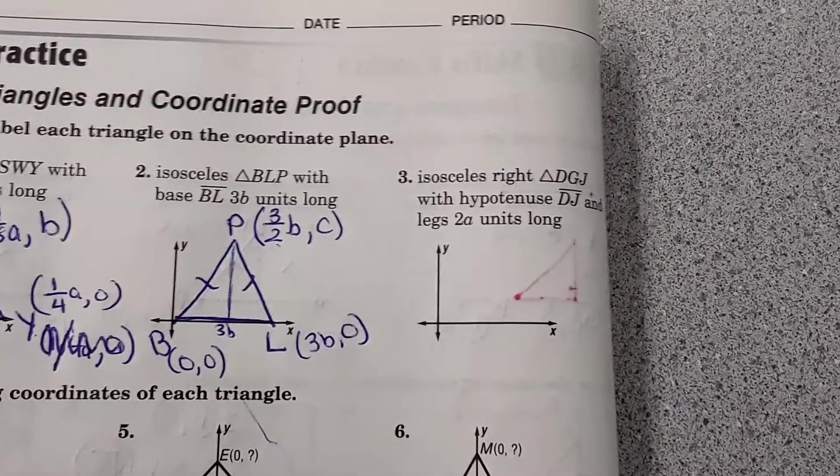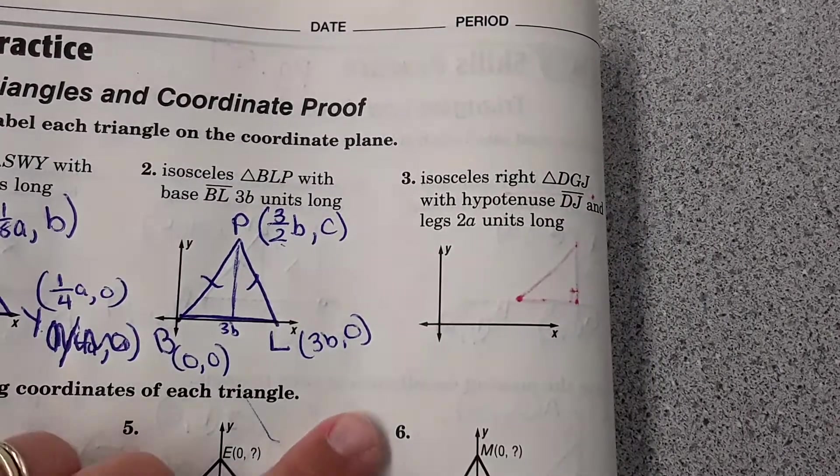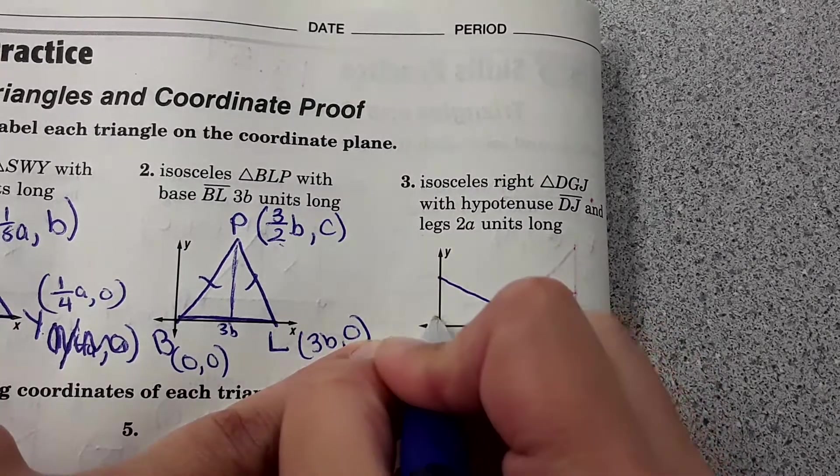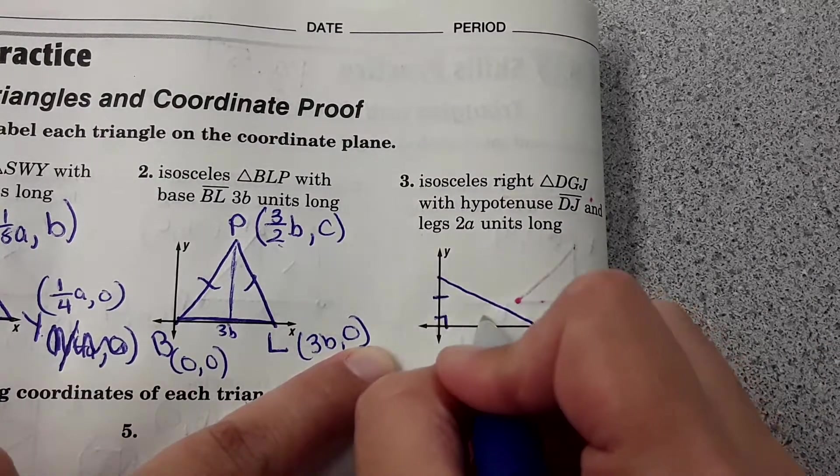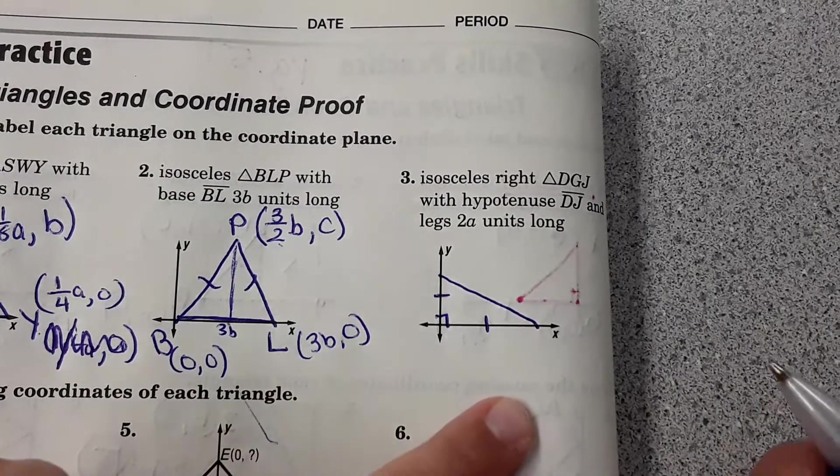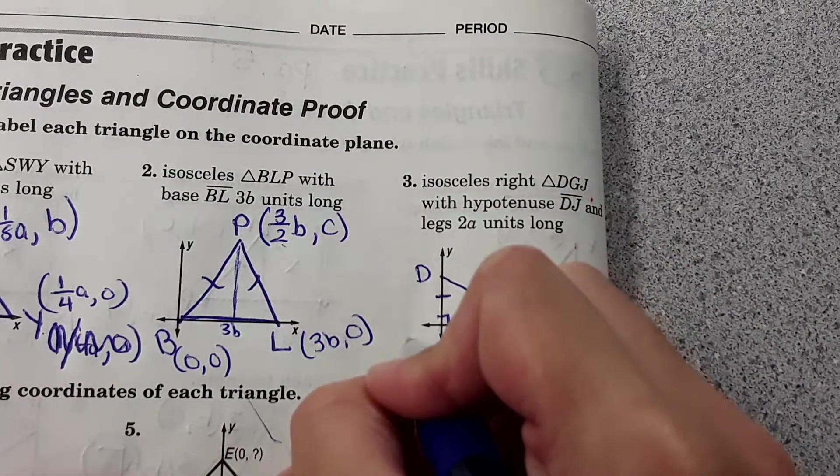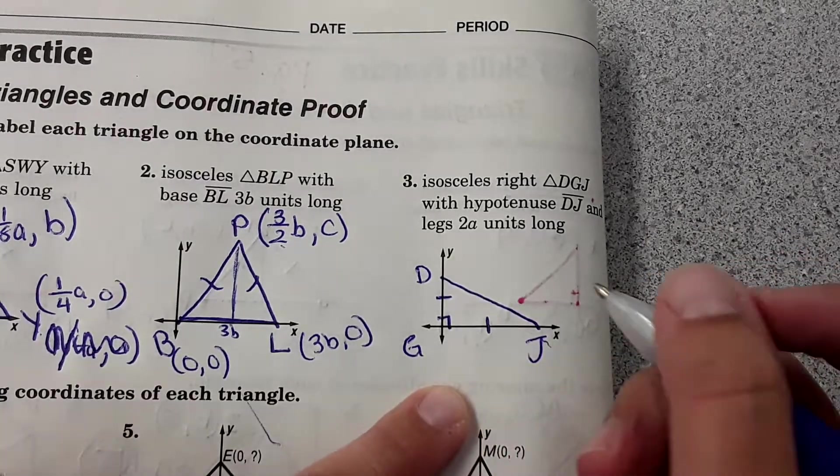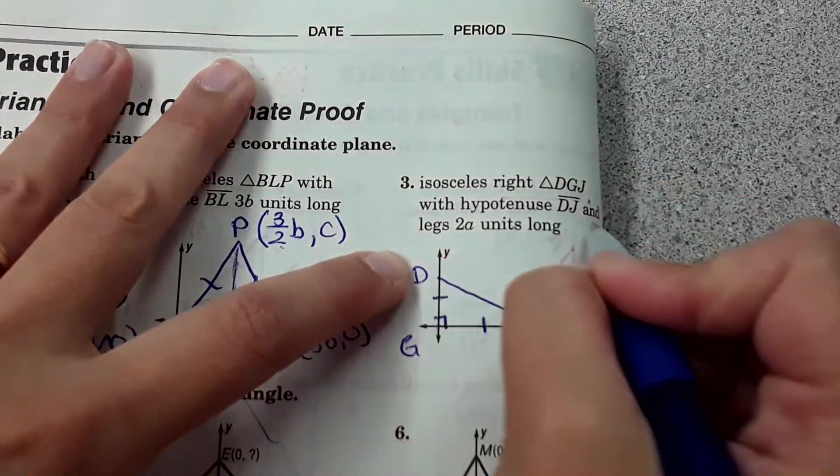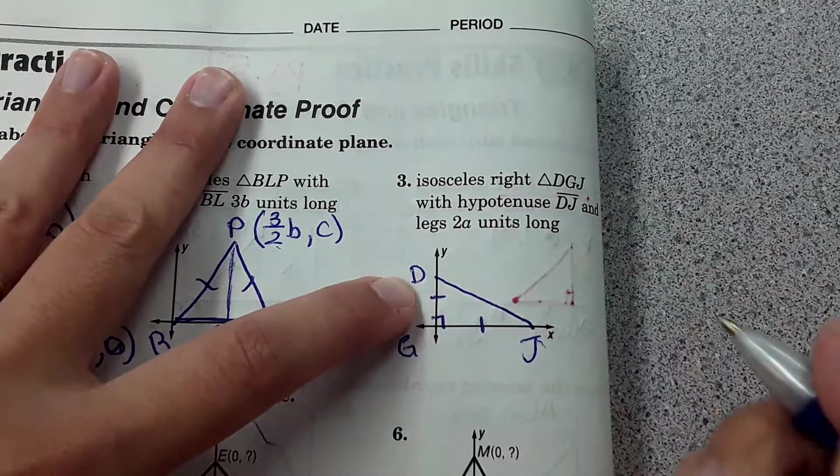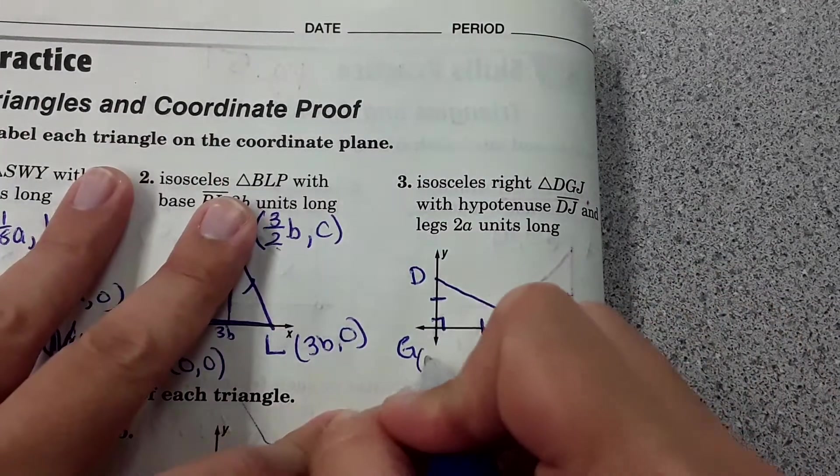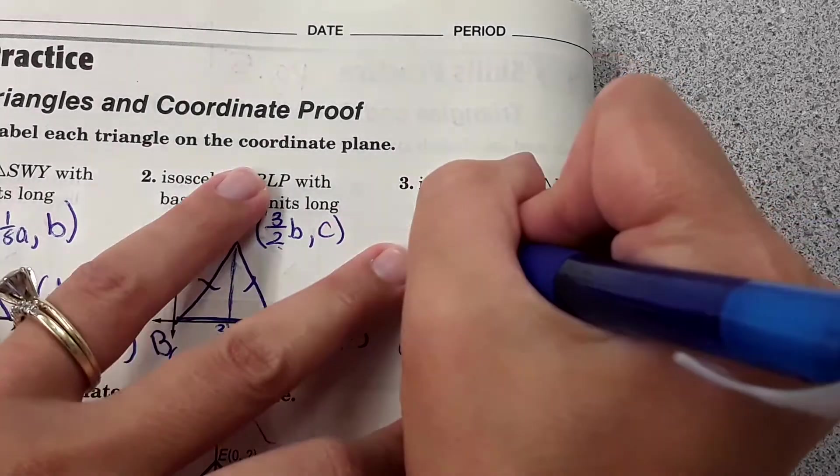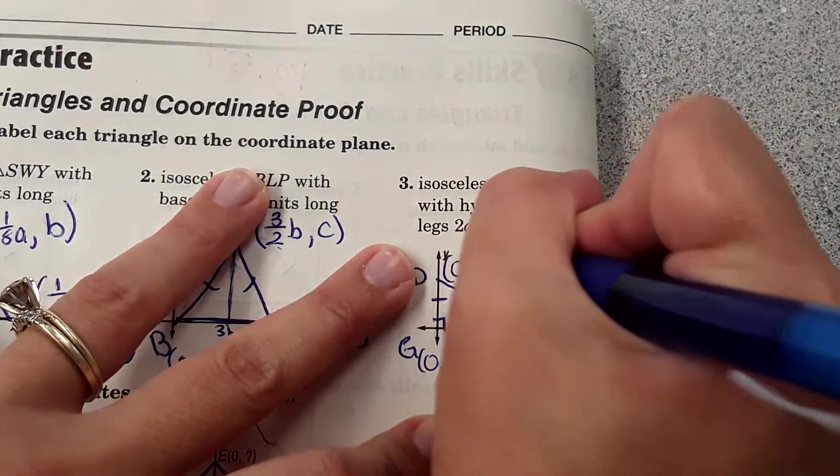And number three: isosceles right DGJ. I didn't draw this to scale. This should be the same length as this. And then it says the legs are 2A units long, so this would be at zero zero. This would be at 2A zero, and then up here would be at zero 2A.